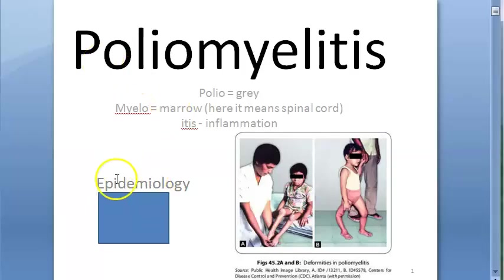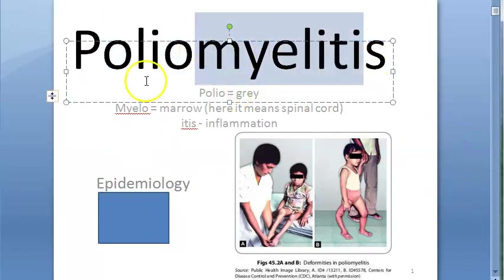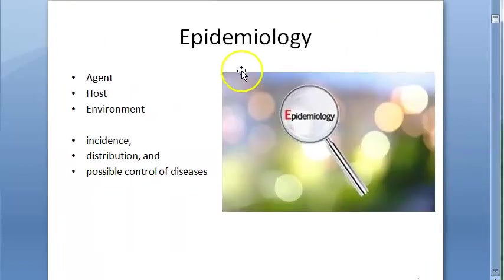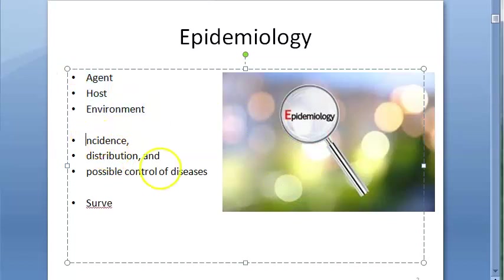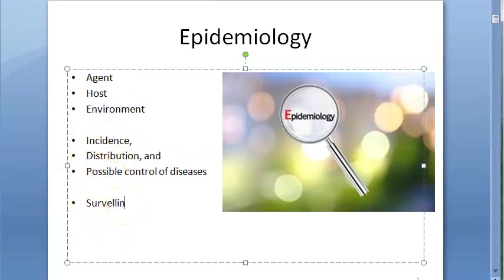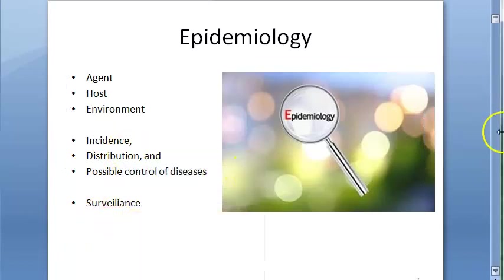In this video we want to look at the epidemiology of poliomyelitis, or polio. In epidemiology we will look at the agent, host, and environment — the epidemiological triad — then we look at incidence, distribution, control of diseases, and surveillance.